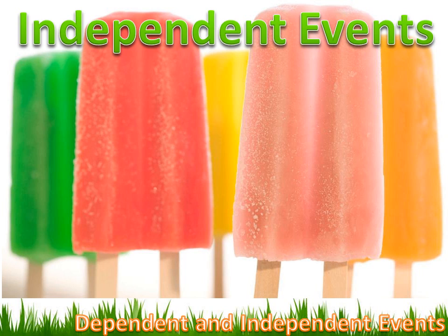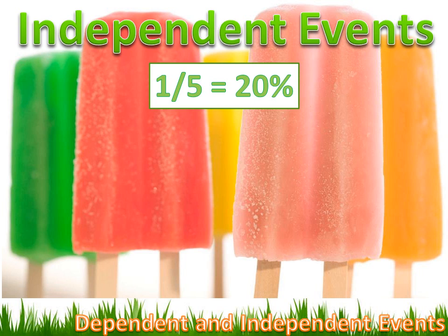He's going to pick one at random and give it to me first, then pick another one at random and give it to you. Let's say he picks a green popsicle for me. Before he picks yours, he goes back to the freezer, gets another green popsicle, and now he's got five flavors again. Your chances of getting green are one in five — one way to win out of five potential outcomes. The two events were independent because we replaced the green popsicle.